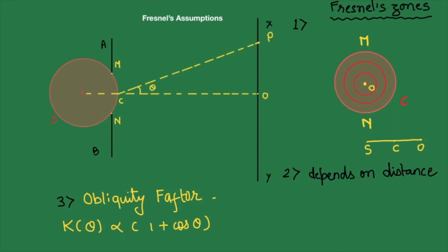We know that the effect of wavefront is maximum in forward direction, but Huygens discarded the wavefront which was going in backward direction. With obliquity factor that can be justified. As the theta keeps on increasing, the wavefront's effect keeps on decreasing.